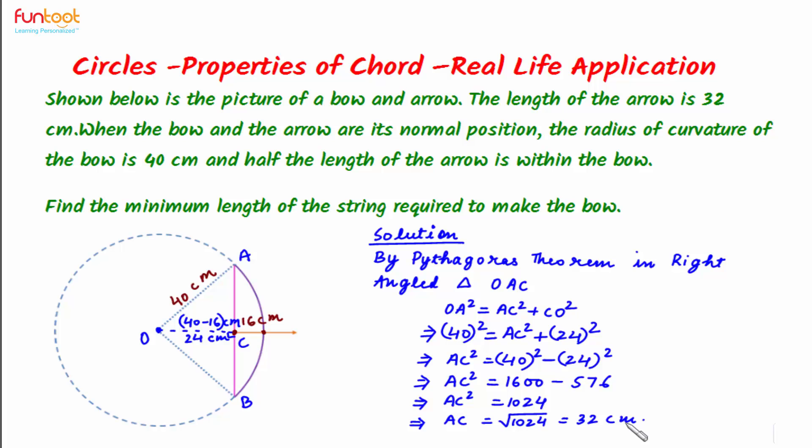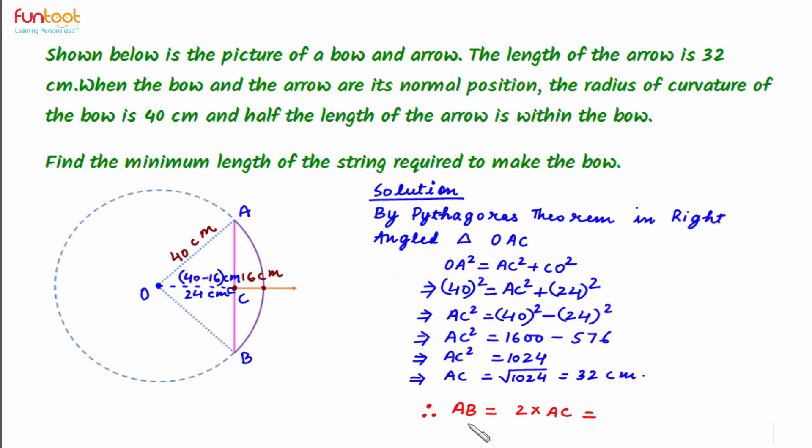Therefore AB will be equal to twice of AC, so that means twice of 32 centimeters equal to 64 centimeters. So this is what we have to find in the question: length of the string which is AB equal to 64 centimeters.